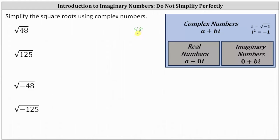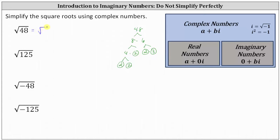For 48, let's start with 8 times 6. 8 is equal to 4 times 2, where 2 is prime. 4 is equal to 2 times 2, which are both prime. And 6 is equal to 2 times 3, both are prime. The prime factorization of 48 has four factors of 2 and a factor of 3. Let's write the square root of 48 as the square root of the prime factorization 2 times 2 times 2 times 2 times 3.